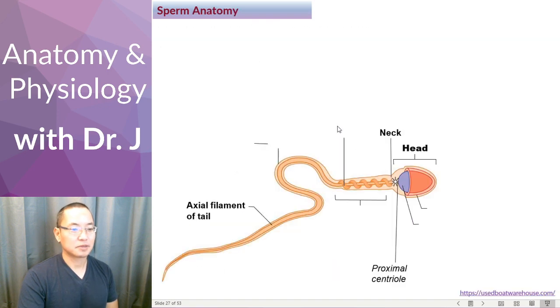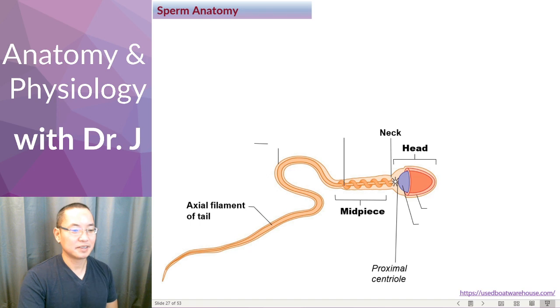Sperm anatomy: the sperm has three main parts — the head, the midpiece, and there is a neck joining the head and the midpiece. And then you have the tail.